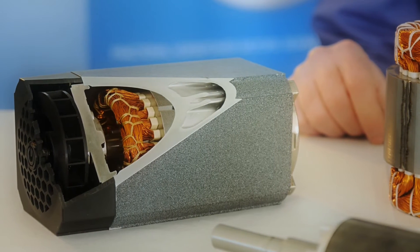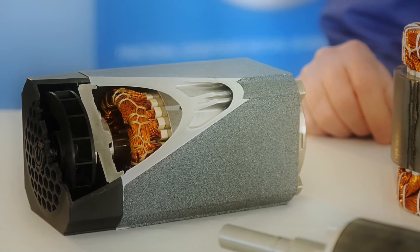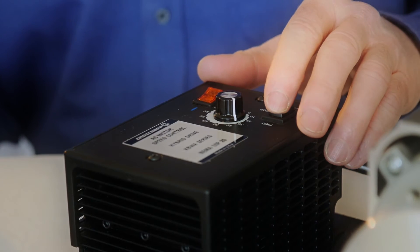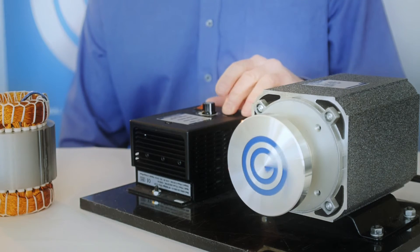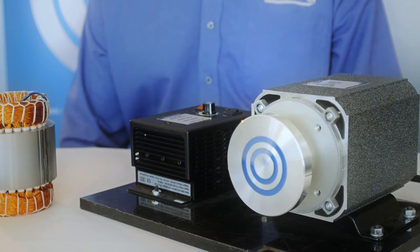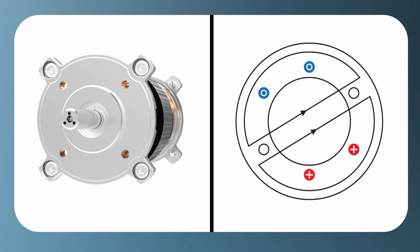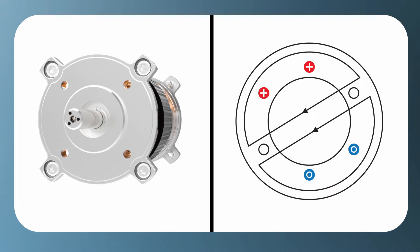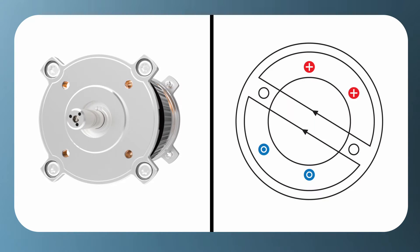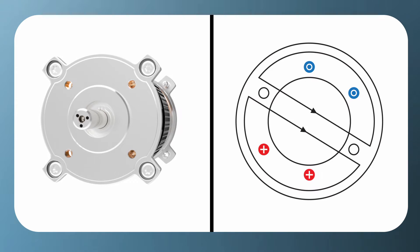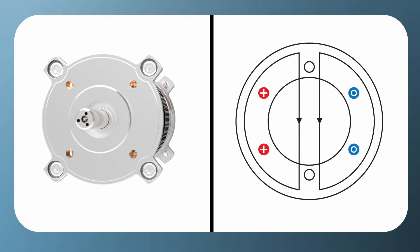In three-phase motors, the current in the stator sets up a rotating magnetic field as shown here. The magnetic field rotates due to the 120-degree phase offset in each phase of the power supply. This rotating magnetic field induces a current in the bars of the rotor. The current in the rotor sets up its own magnetic field, and the interaction between the stator and rotor magnetic fields causes the rotor to rotate.